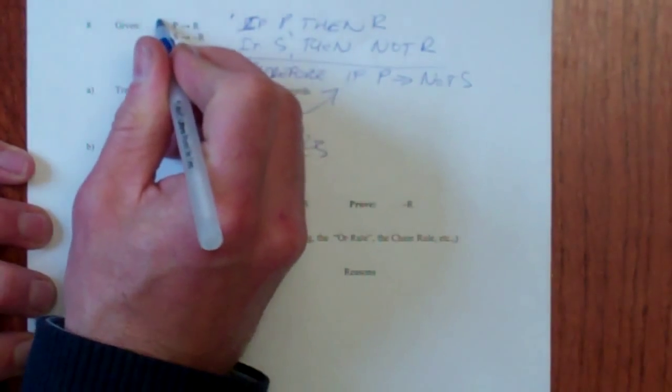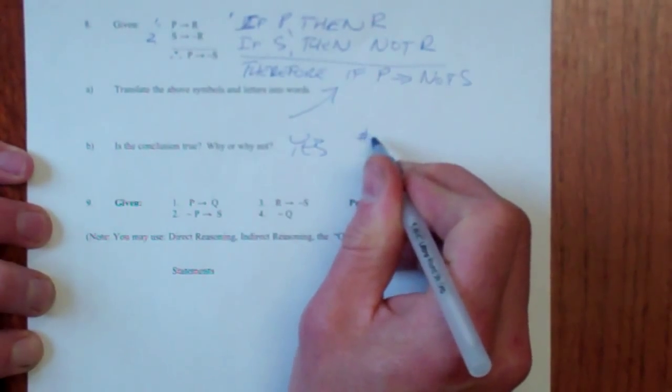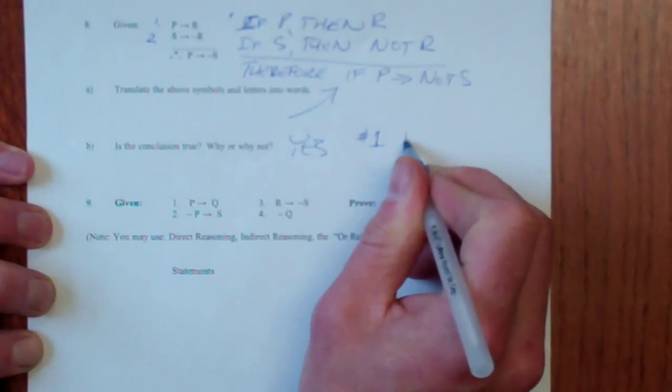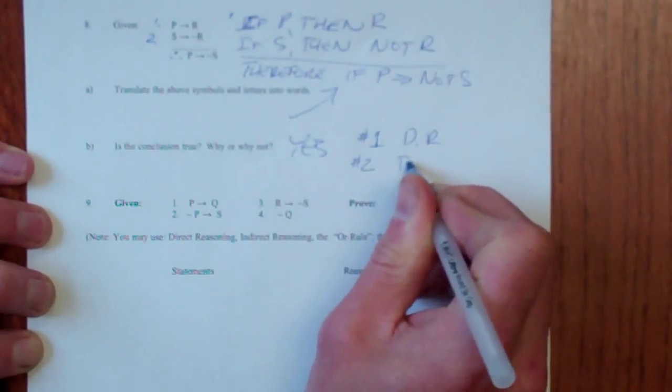Step number, if that's one and that's two, however you want to do it. Number one, direct reasoning. And number two, indirect reasoning.